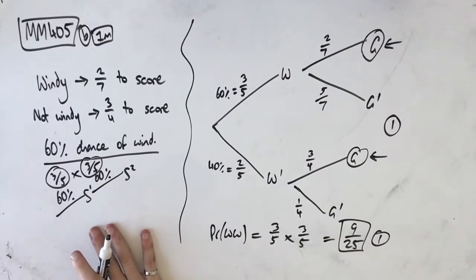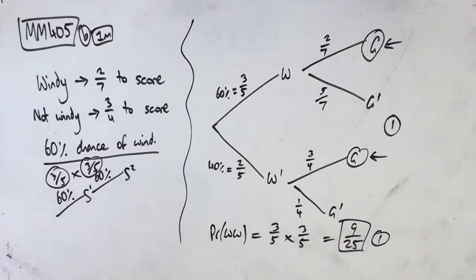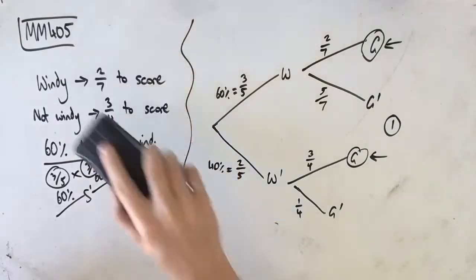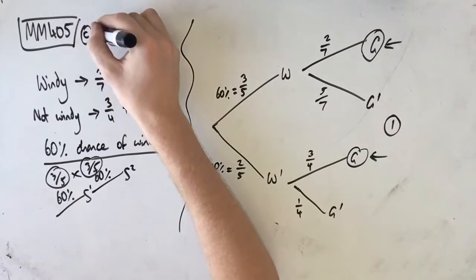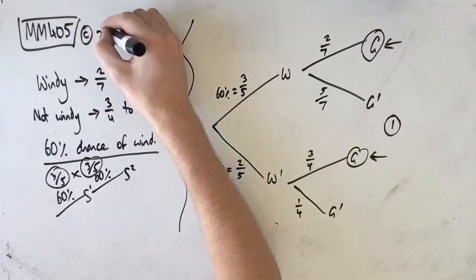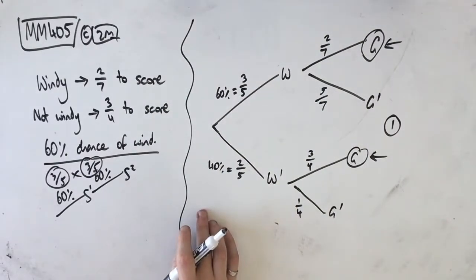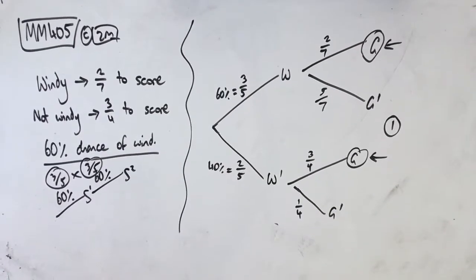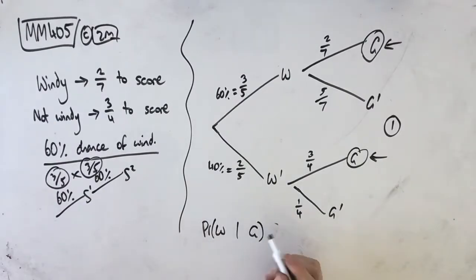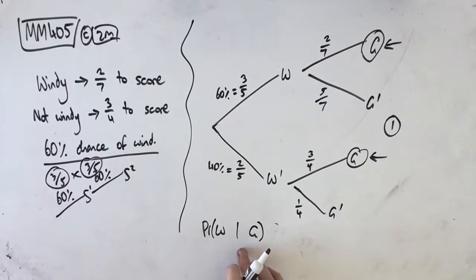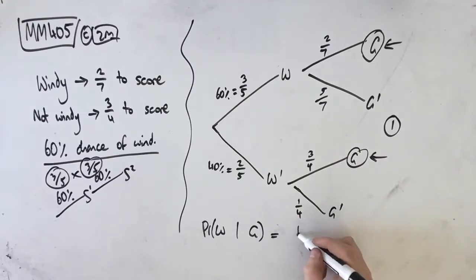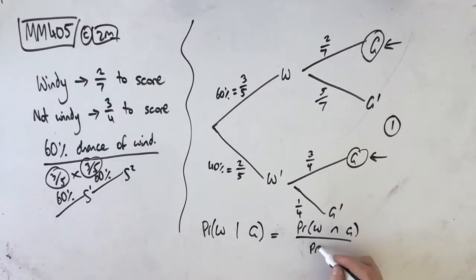Let's move on to part C. Part C is a bit of a tricky one because we have to identify what we actually need to do. This is a two-mark question. On a particular Sunday, Addison takes one shot at goal and successfully scores — what is the probability that it was windy that day? So we're basically asking: what's the probability that it's windy, given that he got a goal that day? Because we know he's scored that day. So according to our conditional probability rule, P(W given G) equals P(W intersect G) over P(G).